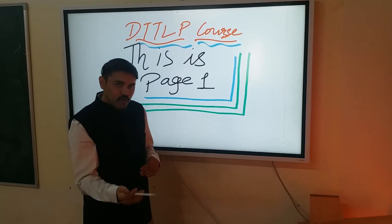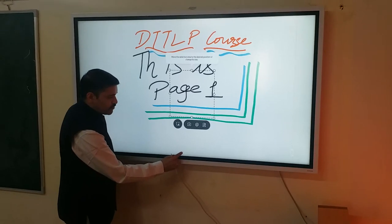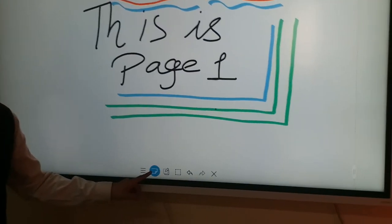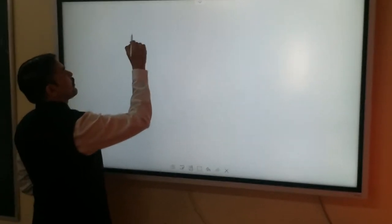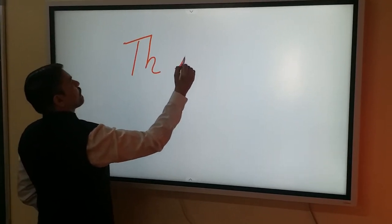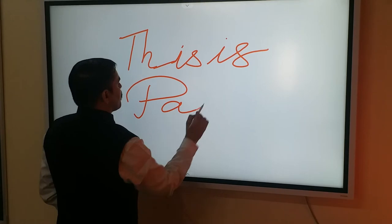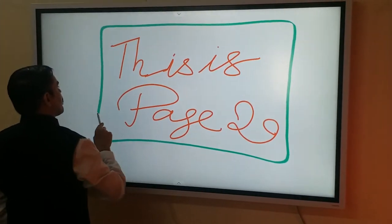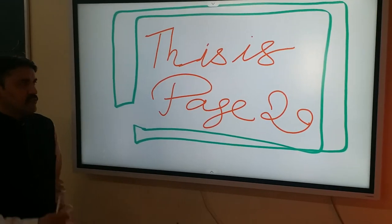Now if I want to scroll through a different page in the same role, I will go to this menu option. You can see you can select this particular option where you will see different roles. Let's go to the second page, and in the second page I can write. So this is the second page.